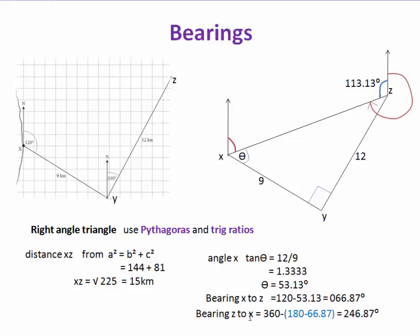Now for the bearing from Z to X, we find the supplementary angle, which is 113.13 degrees. Then 360 minus the supplementary angle gives us the bearing from Z to X — measuring clockwise from north — which is 246.87 degrees.